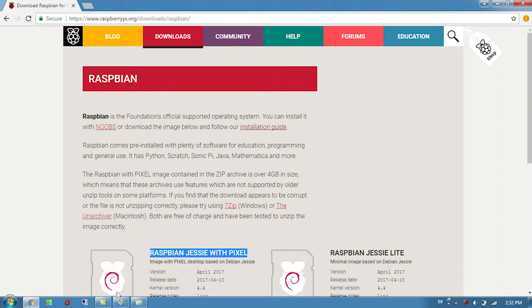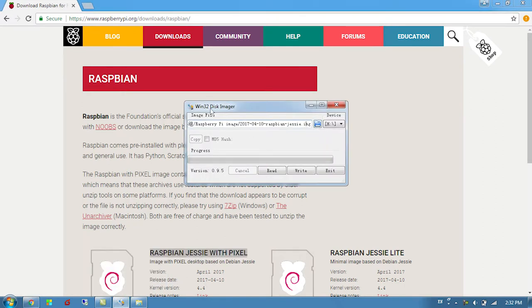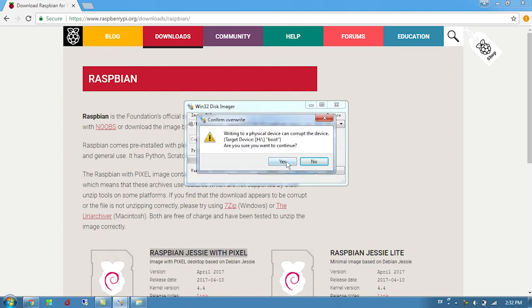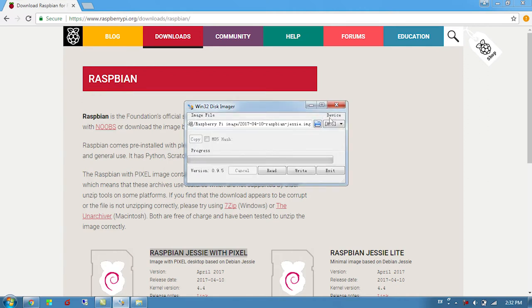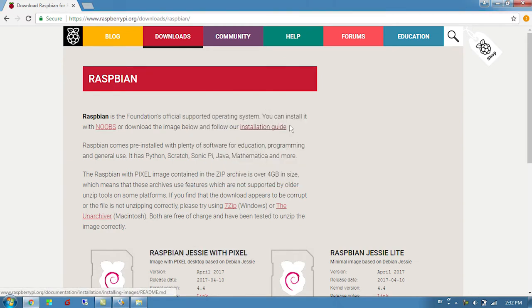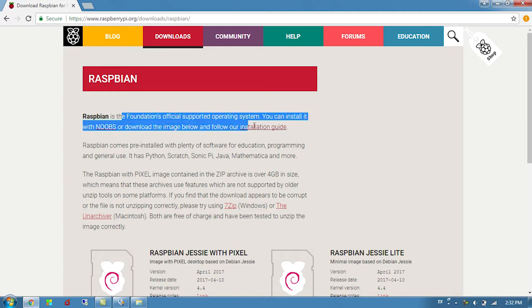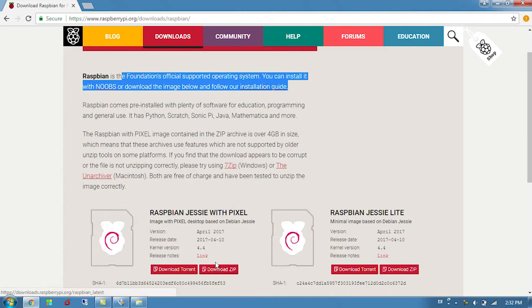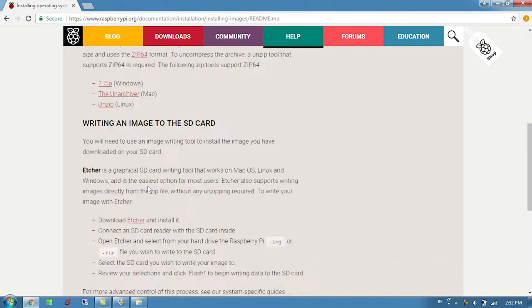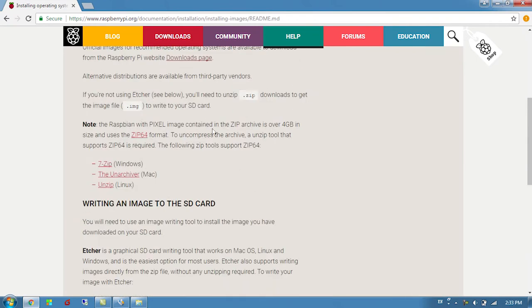After downloading, unzip the zip file and get the image file. Use Win32DiskImager. Choose your SD card and hit write. I have already burned the image, so I'm going to skip this. If you are using another platform or need a detailed installation guide, you can check the installation guide just above the download page. You can get every platform and all the details there.